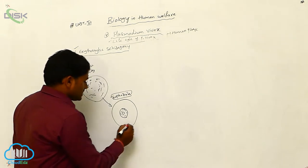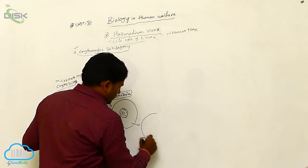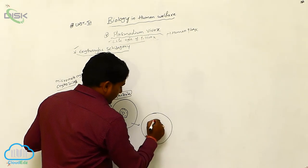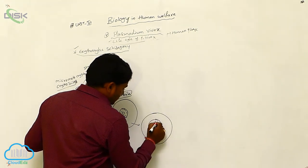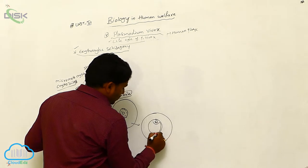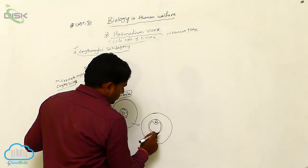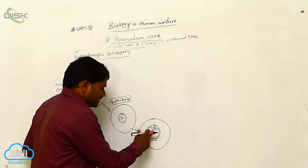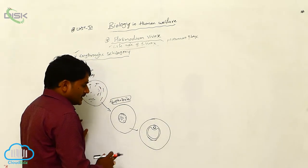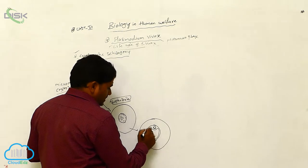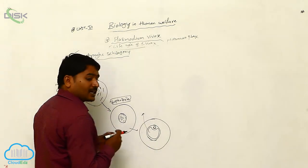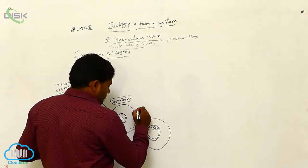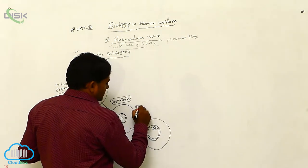After this trophozoite stage, there is a development of a small vacuole. This vacuole slowly develops and pushes the nucleus to a corner. Then this stage looks like a finger ring.